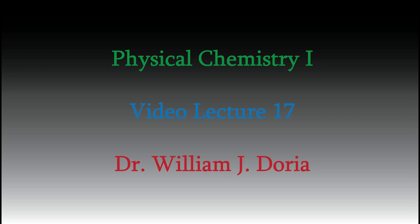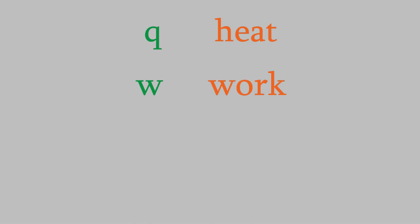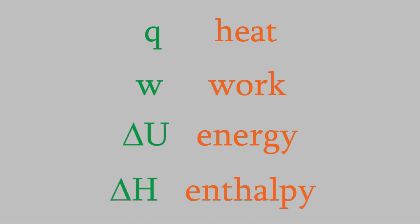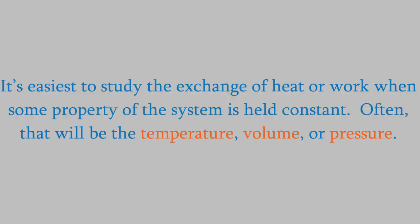Hi, and welcome back to my series of videos for Physical Chemistry 1. In the last two videos, we talked about four thermodynamic properties of chemical processes: the change in heat, work, energy, and enthalpy. One thing we also mentioned is that it's easiest to study these properties if we hold some aspect of the system constant — that's usually the temperature, volume, or pressure, but as we'll see today, there are also other properties that we can hold constant.